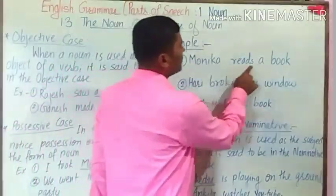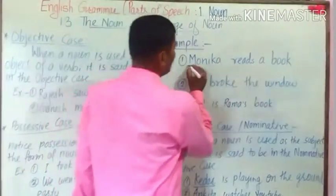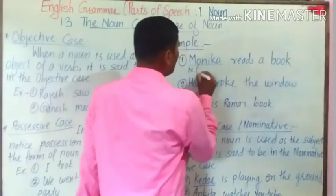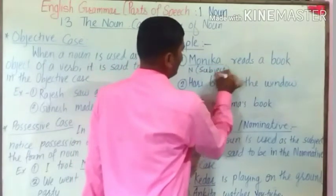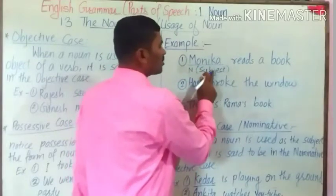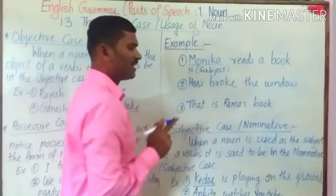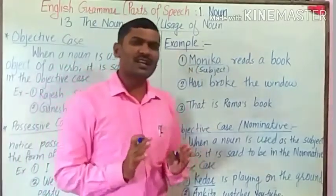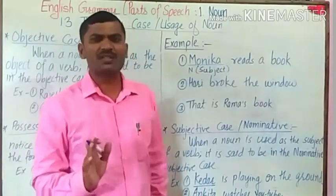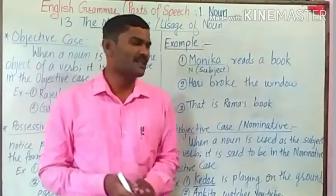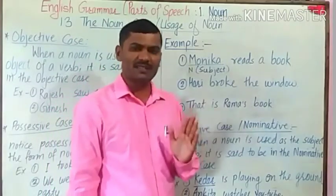Example number one: Monika reads a book. Here, Monika is a noun, and this noun is functioning as a subject. Monika is the subject of the verb 'read'. Who reads? Monika reads. So, the noun is functioning as a subject in the sentence. When a noun is functioning as a subject, it is called subjective case or nominative case.